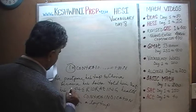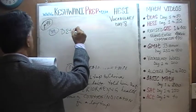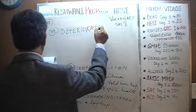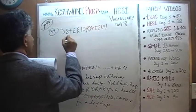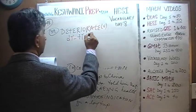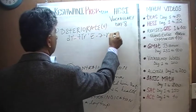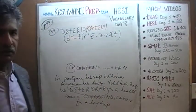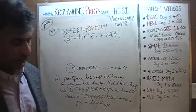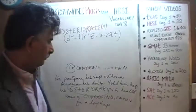The next word — I just want to learn this word because of the spelling: D-E-T-E-R-I-O-R-A-T-E — deteriorate. What does it mean to deteriorate? To deteriorate means to get worse, to worsen.